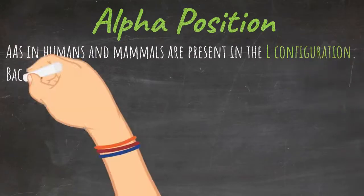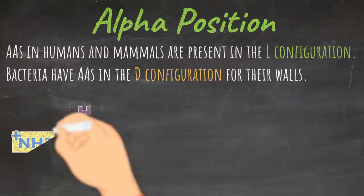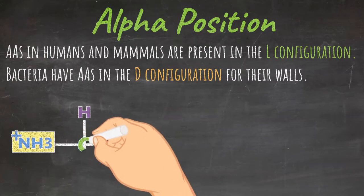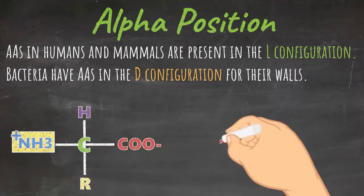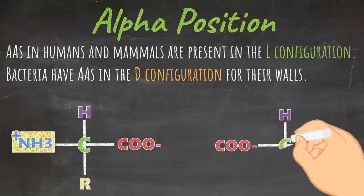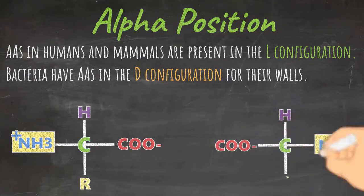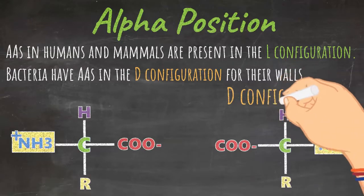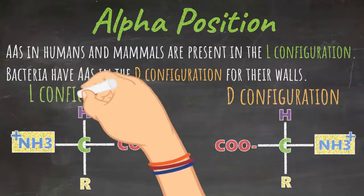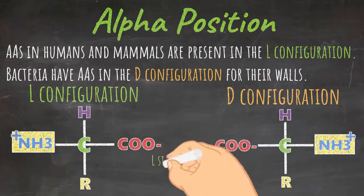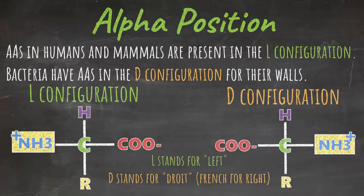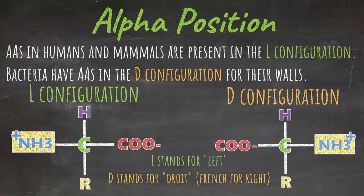For the MCAT, you need to know the alpha position of amino acids. Amino acids in humans and mammals are present in the L configuration; bacteria have amino acids in the D configuration for their cell walls. The L configuration shows the amino group on the left-hand side with the carboxylic acid group on the right. The D configuration is the reverse. An easy way to remember this: L stands for left, and D stands for 'droit,' which is French for right.